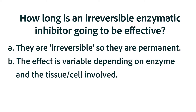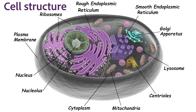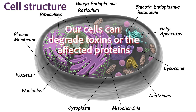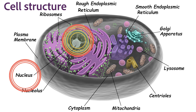You were correct if your answer was that it would be variable depending on the enzyme and the tissue involved. The important thing to understand is that an irreversible enzymatic inhibitor doesn't mean we're never going to have that enzyme again. In some cases, the inhibitor will be degraded at that active site, or the cell will replace the enzyme that is affected — as long as the cell that contains those enzymes has a nucleus.